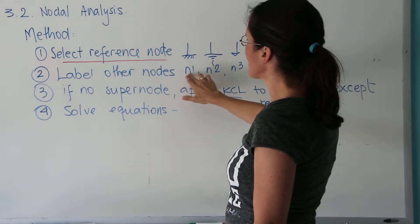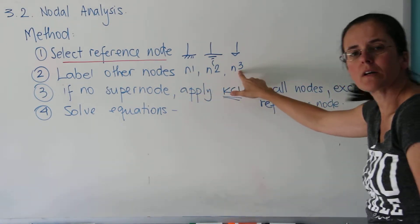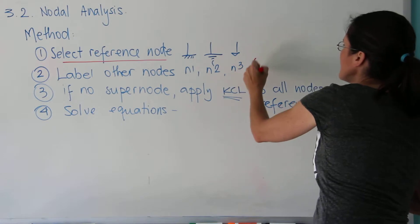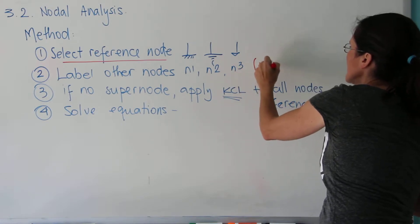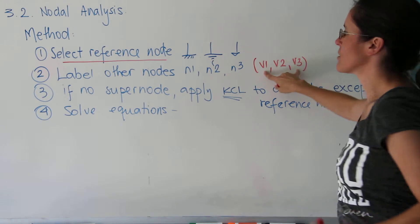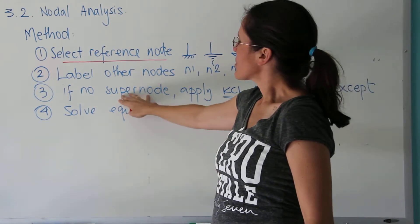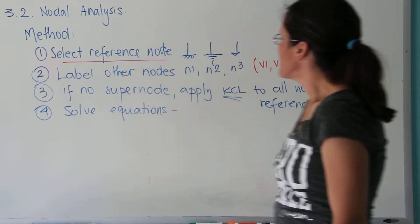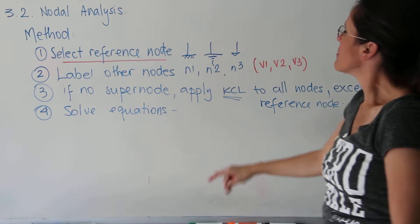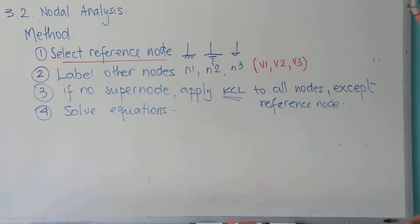The other nodes I'm going to label either A, B, C, or N1, N2, N3, or even V1, V2, V3. I think your book goes by V. We're going to learn what a supernode is next class, but in general you would apply Kirchhoff's current law to all nodes except the reference node.